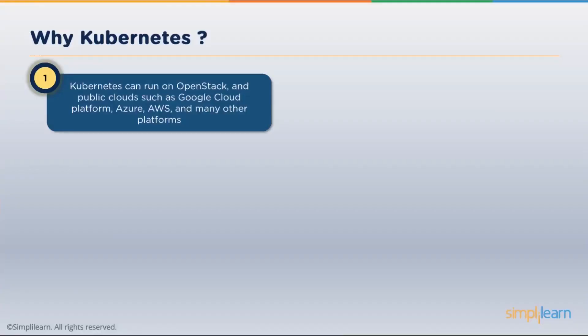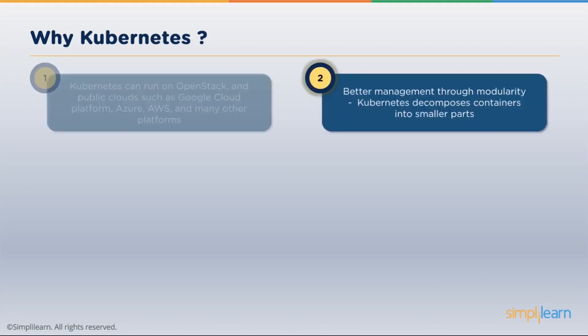So why would you want to use Kubernetes? Kubernetes itself is an open source solution originally developed by Google, but it is available on most cloud platforms today — AWS, Google Cloud, Microsoft Azure — all of them support Kubernetes. As you're setting up your infrastructure, particularly if you're using containers, you'll see that the support for Kubernetes is provided very efficiently and effectively by all three vendors. It's extremely useful for being able to manage large modular environments, and one of the big benefits of Kubernetes is its modularity — it really breaks down containers into their smaller parts.